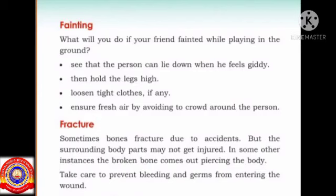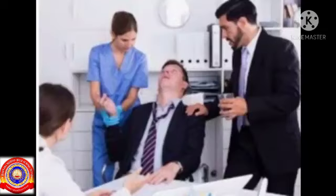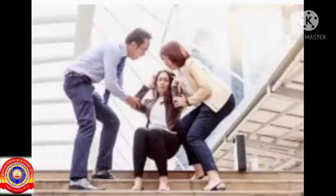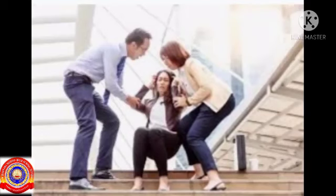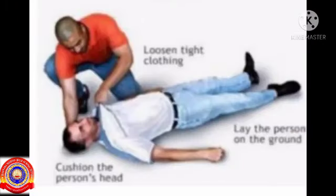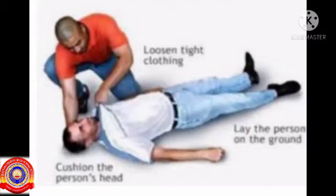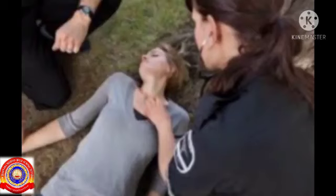What will you do if your friend fainted while playing on the ground? First, we have to ensure the person can lie down when he feels giddy. Giddy means having the tendency to fall. Then, we have to hold the legs high. Then, loosen the tight clothes. The last step is to ensure fresh air by avoiding crowding around the fainted person.